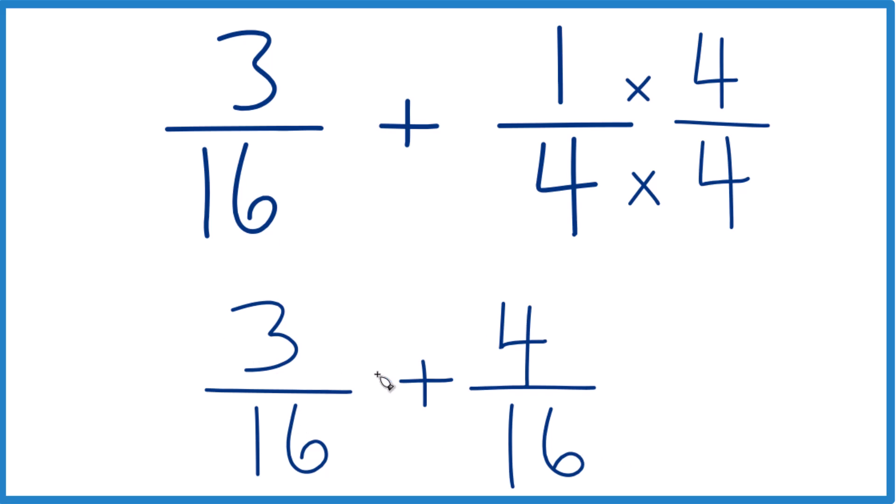When you add fractions, denominators are the same, you just add the numerators. 3 plus 4 is 7. Keep the denominator the same. And that's your answer, 7/16.